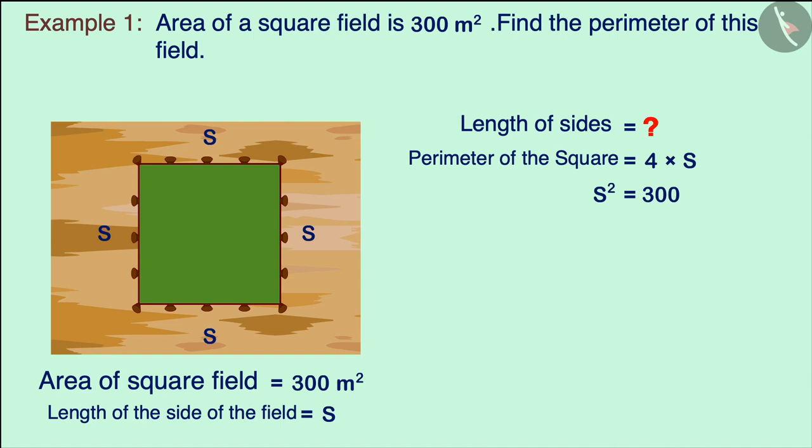Pay attention to this equation. We have to find the value of s whose square is 300. That is, to find the value of s, we have to find the square root of 300. Let's estimate the square root of 300.